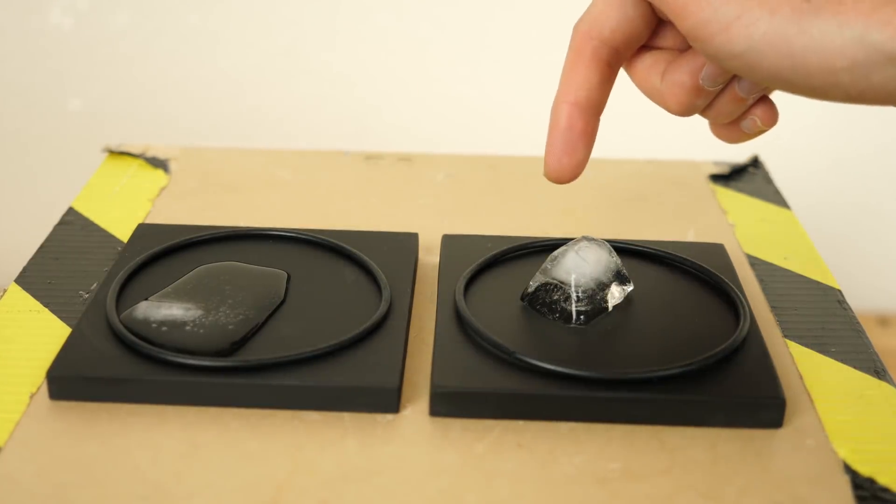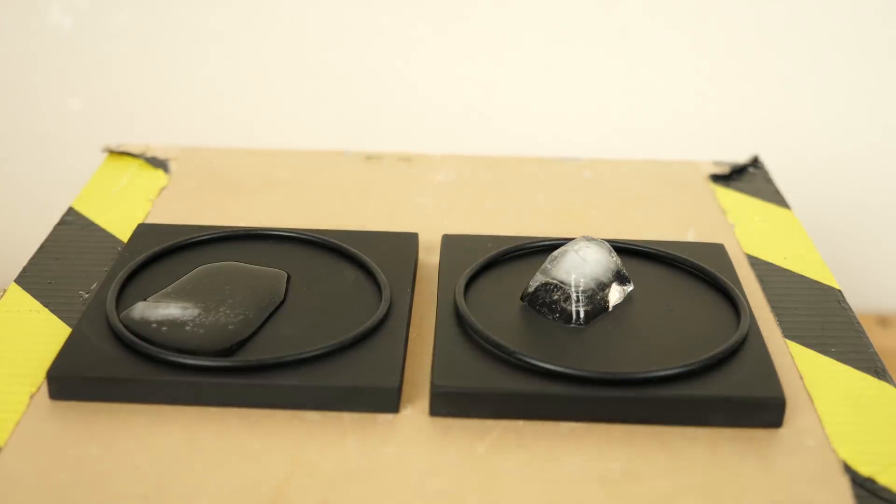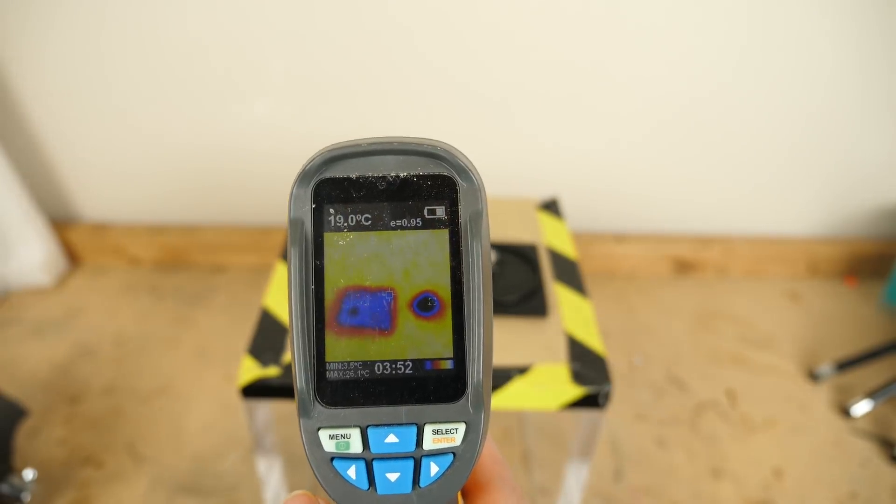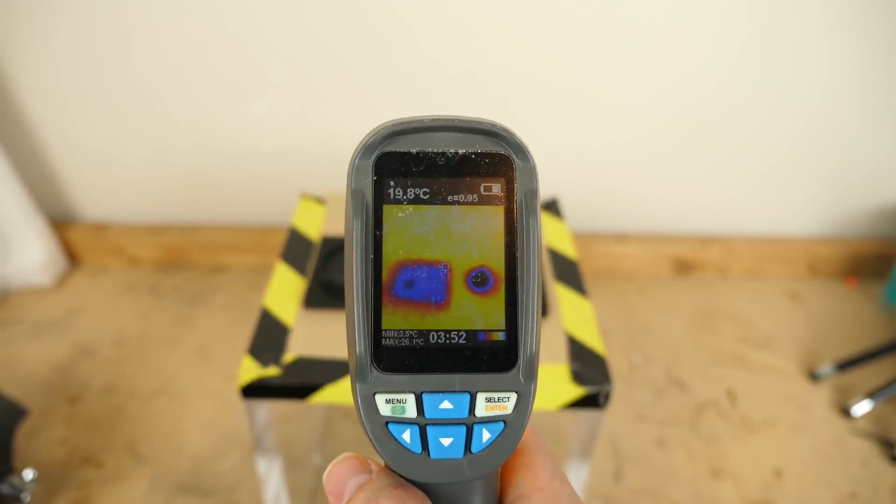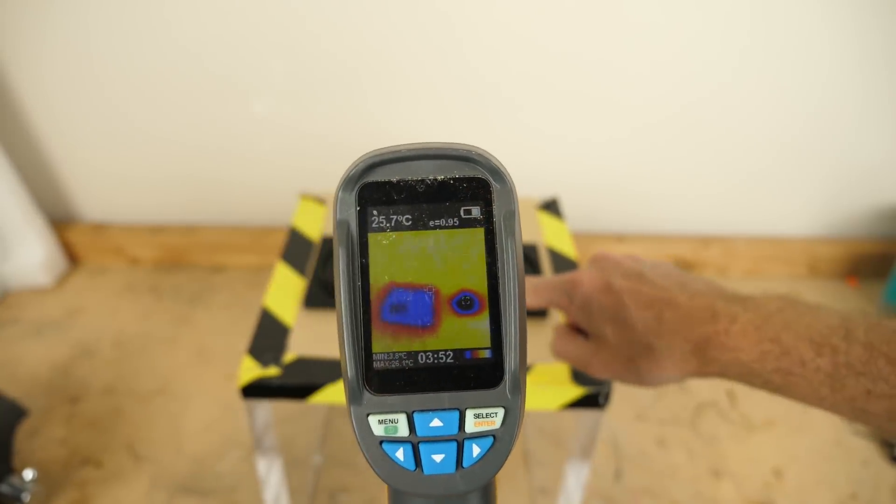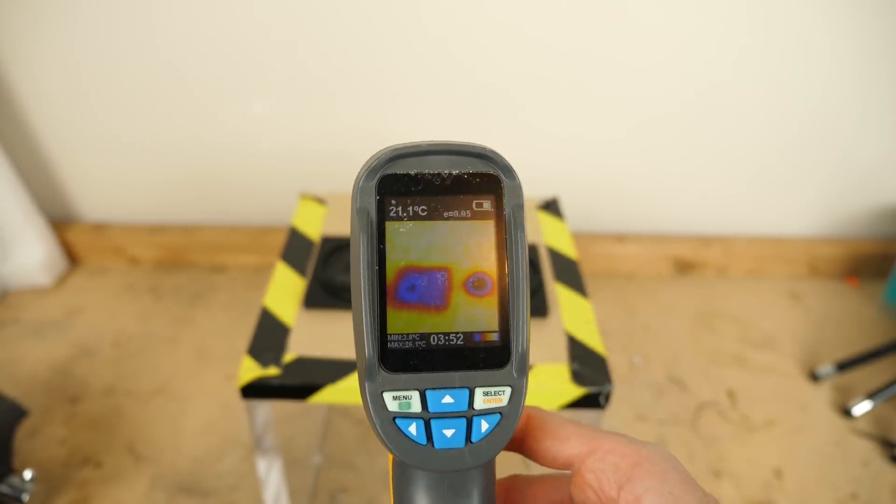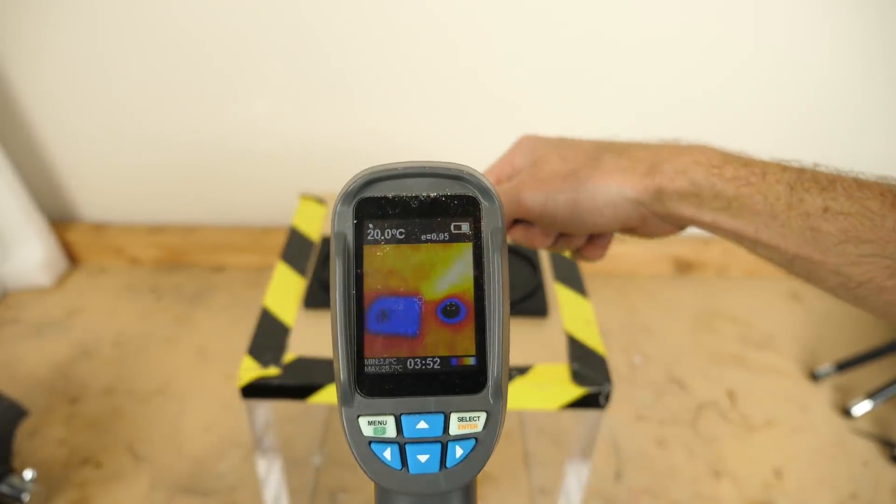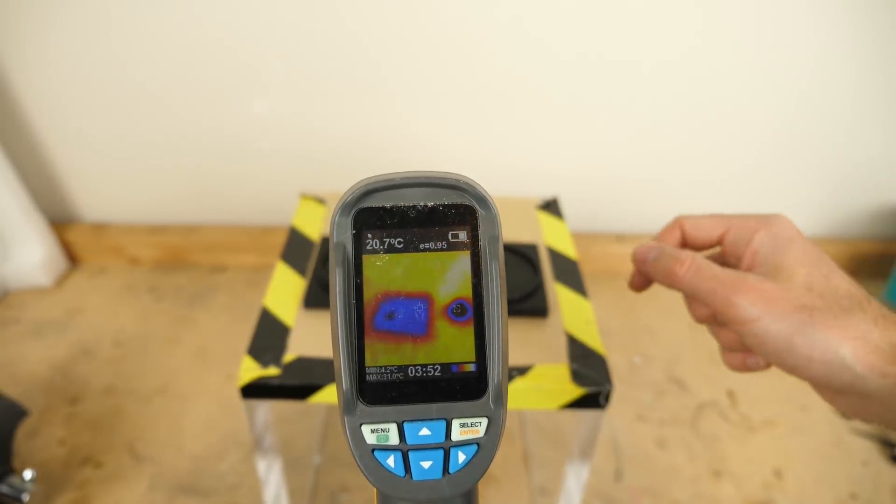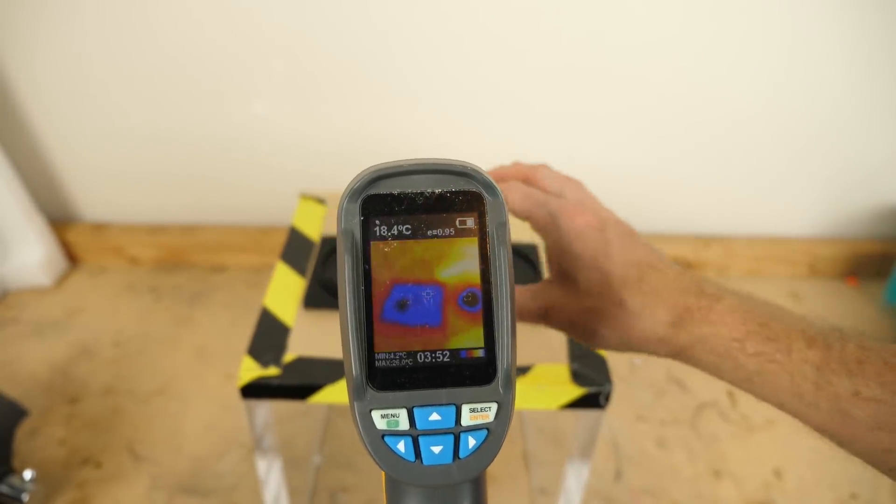So now that the ice has melted, let's check the block's temperature again. So look at this now, look at the blocks here. So you can see the one on the right, it's just a little dot right where the ice cube is. But then the one on the left has become completely blue, meaning it got, the whole block got completely cold.